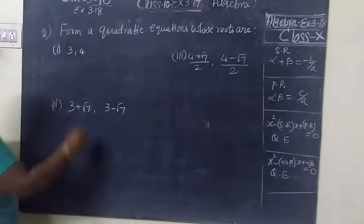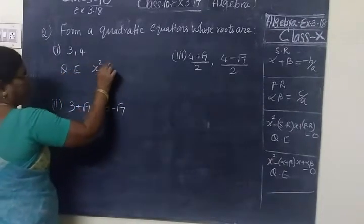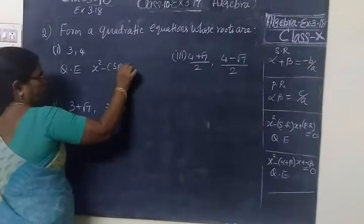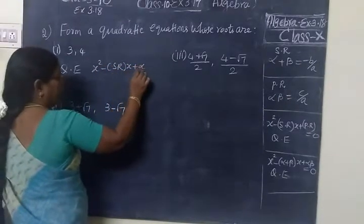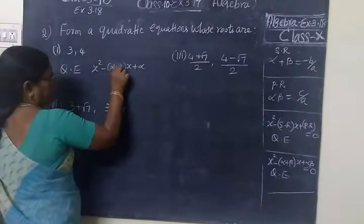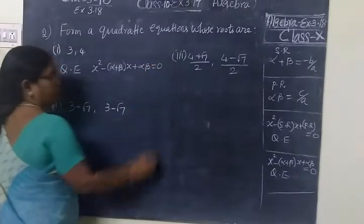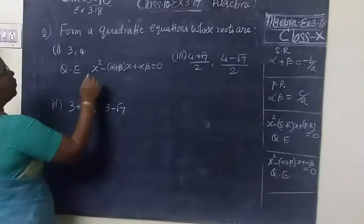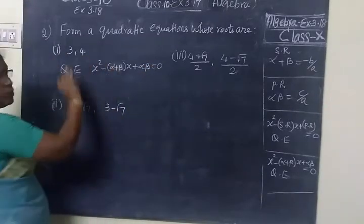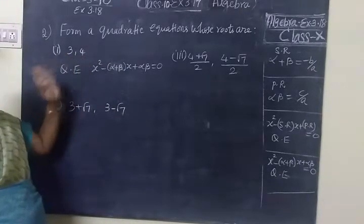So now we are finding a quadratic equation using the formula x square minus sum of the roots x plus product of the roots. We know this one: alpha plus beta x plus alpha beta equal to zero. So alpha plus beta, this is the root x square. This is alpha, this is beta.